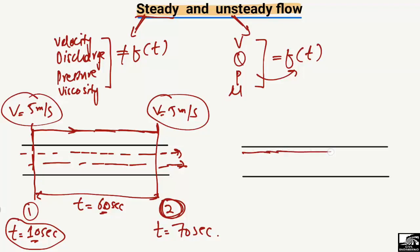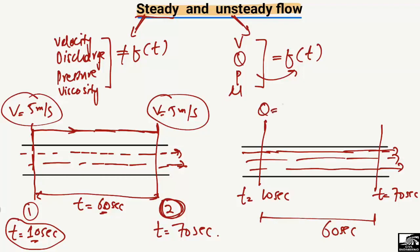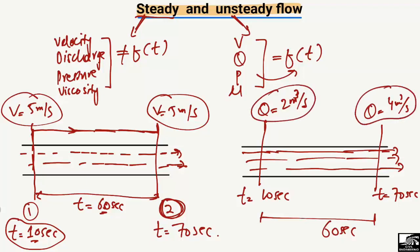In the second pipe, fluid is again moving in the same direction. At T = 10 seconds, the discharge is 2 cubic meters per second. After 60 seconds, at T = 70 seconds, the discharge has changed to 4 cubic meters per second. Since the property of the flow has changed with respect to time, this type of flow is known as unsteady flow.